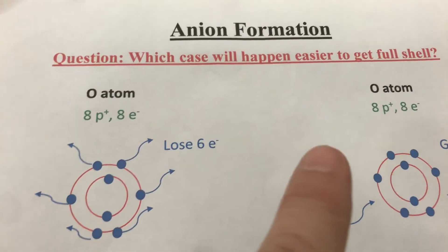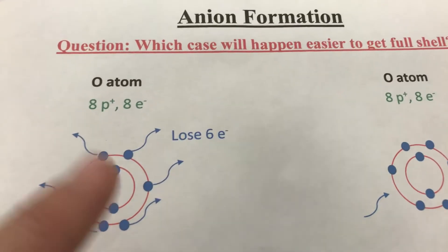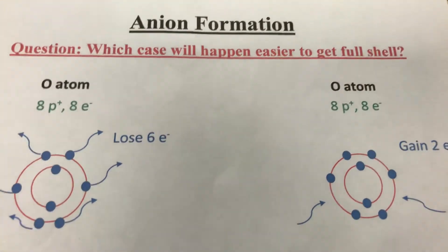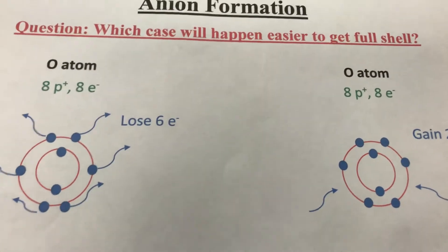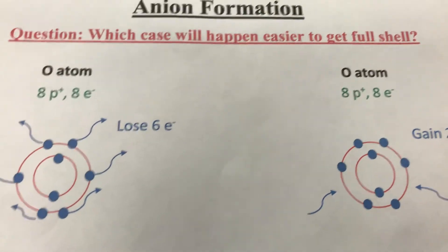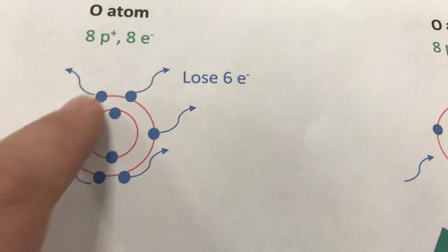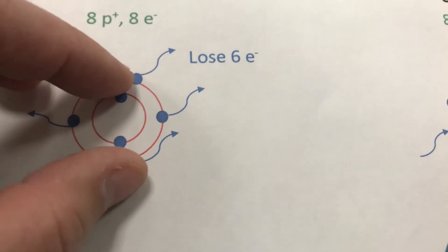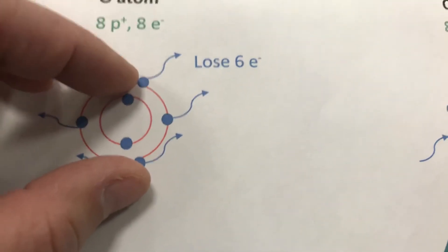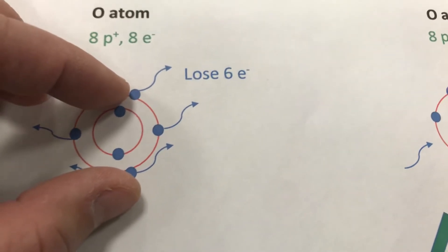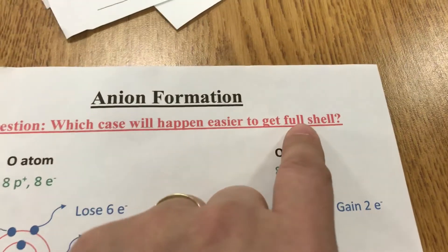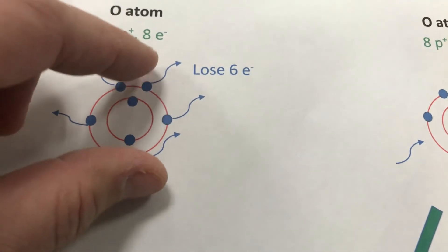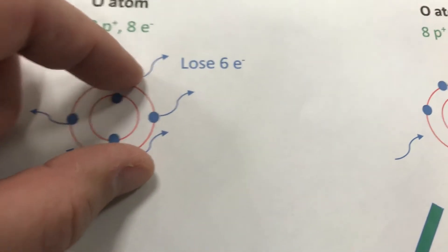Now the next thing is the anion. Same question: which case will happen easier to get a full shell? We have an oxygen atom — 8 protons, 8 electrons. When we draw the Bohr diagram, we have two and six, so eight total. Since I have six valence electrons, you always ask the two critical questions: lose how many electrons and gain how many electrons? In the first situation, I just lose all six. When the six electrons are gone, the second shell is gone, and I only have the first shell. Period one has two electrons — is it a full shell? Yes, because period one can only fit two electrons. So this case gives a full shell.